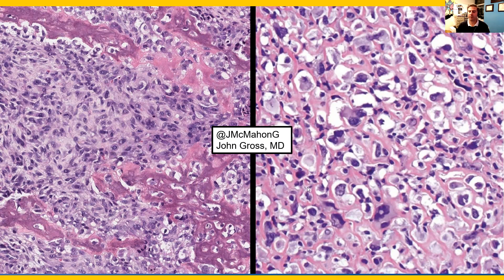On the right, we have an anaplastic sarcoma, which again is directly producing this mineralized osteoid matrix, which is our definition for an osteosarcoma. You'll see there's no osteoblastic rimming in this tissue.